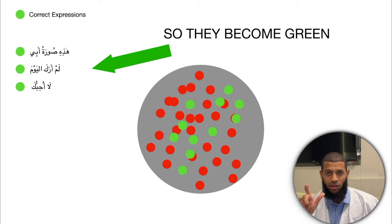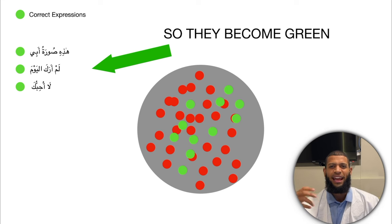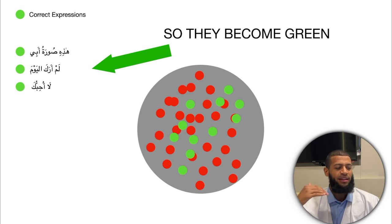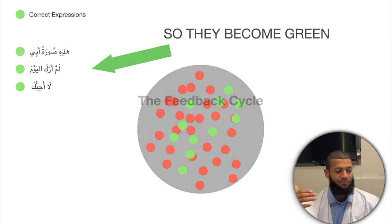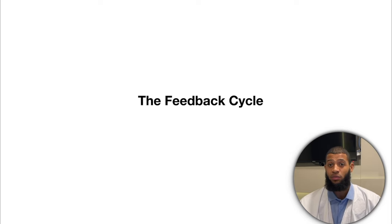To fix this so those red dots become green, instead of making mistakes we say correctly: 'hadhi suratu abi,' 'lam araka al-yawm,' 'la uhibbuka.' Just that little tweak to start speaking more correctly and sound less like a beginner. The concept you need to use is very simple and it's called the feedback cycle.